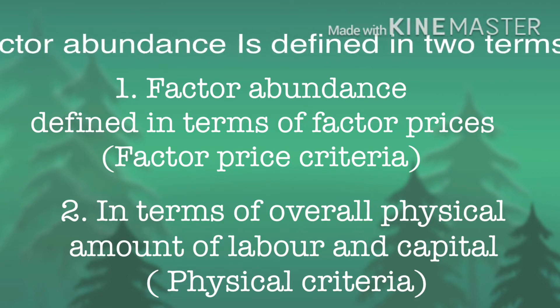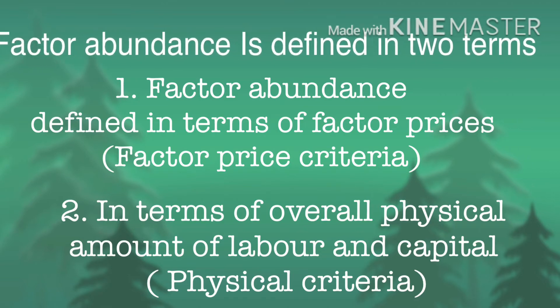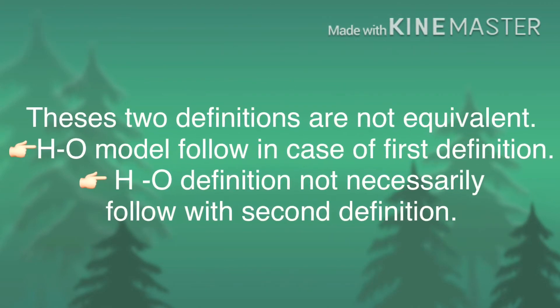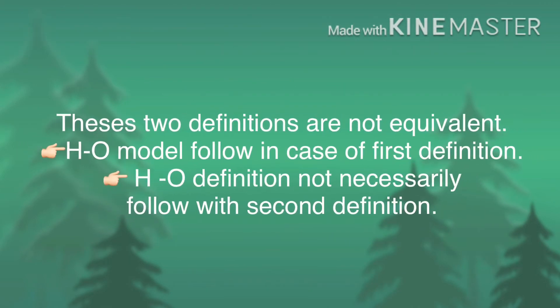These two alternative definitions are not equivalent. We will now show that the Heckscher-Ohlin proposition follows if we use the first definition, but that it does not necessarily follow using the second definition. In fact, Ohlin himself defined richness in factor endowment with the help of factor prices.